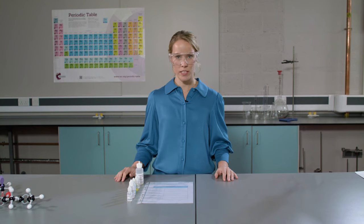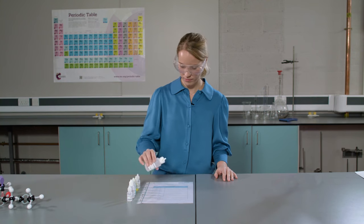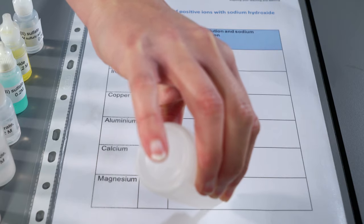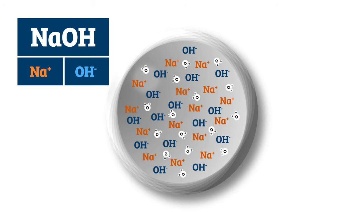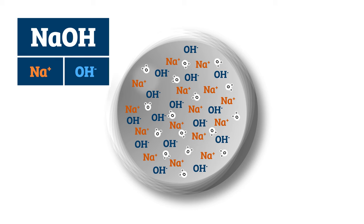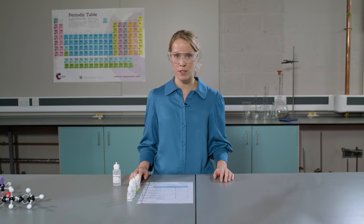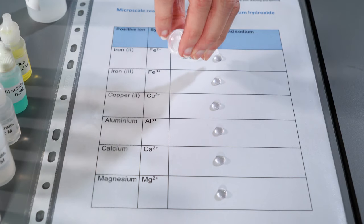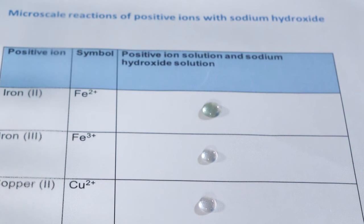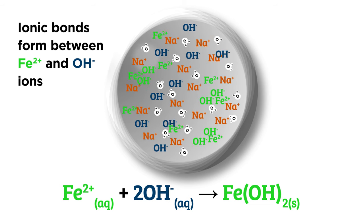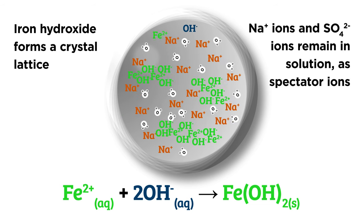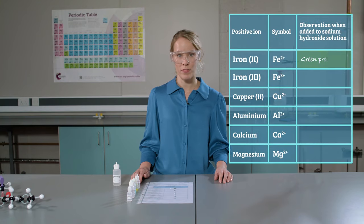First of all, I'm going to put my goggles on. Now I'm going to add two drops of sodium hydroxide to each box in the results table. Stay neat so that you don't get the results muddled. Before we add the positive ion solutions, think about which ions are present in the sodium hydroxide solution. Remember that in aqueous solutions, water molecules are also present, as well as the substance dissolved in it. Now we're going to add two drops of each positive ion solution onto the sodium hydroxide solution. Observe carefully and write down what you see. I'm going to start with iron(II) positive ions. I can see that a reaction has happened and a green precipitate has formed. An insoluble metal hydroxide has been formed — this green precipitate is iron hydroxide.